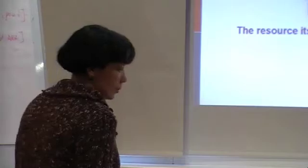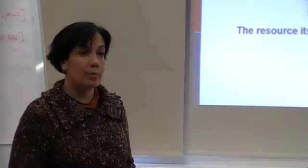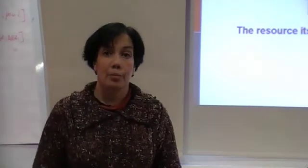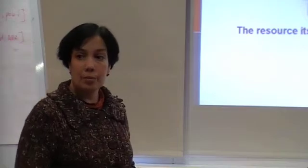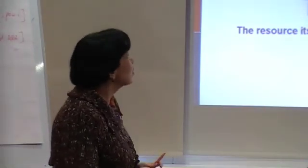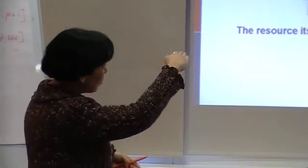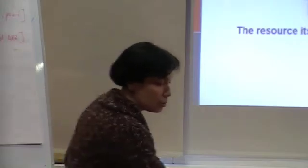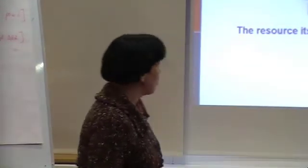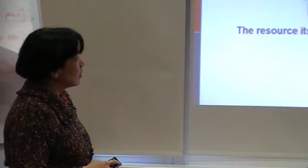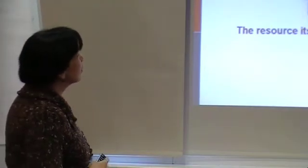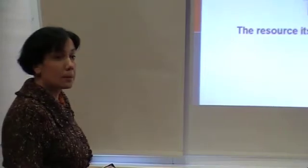I would like to draw your attention once again to the fact that it's the formulation of the physical contradiction that is extremely important — it is exactly this formulation that you should master and be able to apply later on. So if you look at this slide you'll actually see the template. We've got a certain element or a certain object, and according to some parameter this element should have one of the values in order to ensure something, and it should have the opposite value in order to ensure something else.